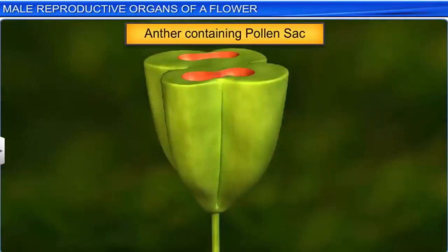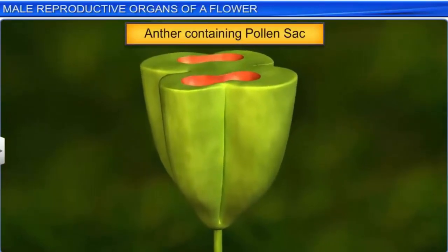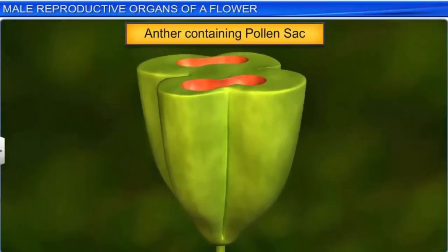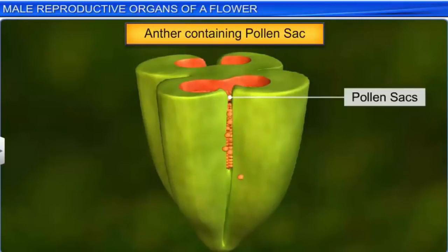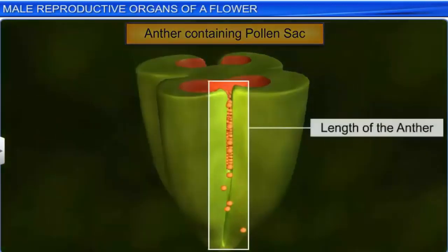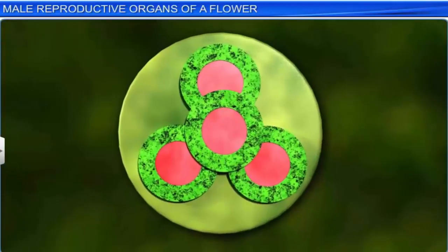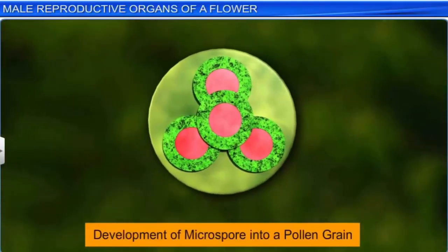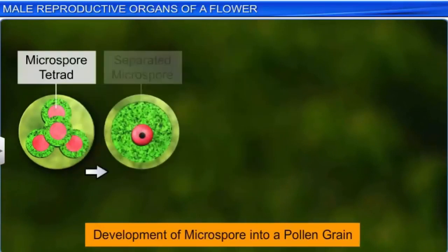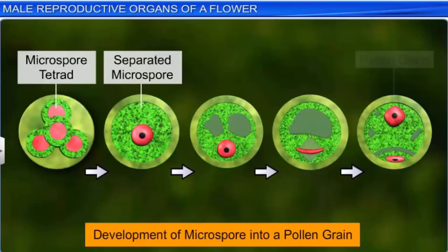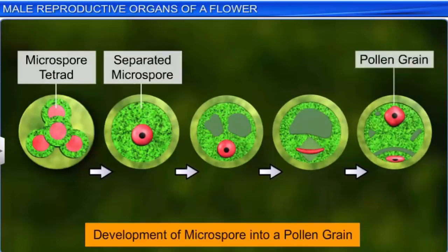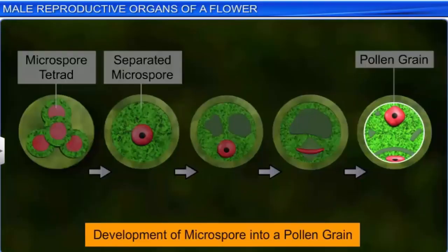As the anther begins to mature, both the microsporangium and microspores undergo changes. While the microsporangium develops into the pollen sacs that extend longitudinally through the length of the anther, the microspores separate from the tetrad and develop into pollen grains. Thus the anther contains thousands of pollen grains, which undergo mitosis to form two unequal cells.